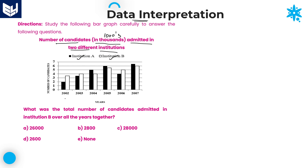If you observe carefully, in the year 2002, for Institute A the value is 2, and for Institute B this line is in between 3 and 4, so it is 3.5 — meaning 3,500. Whatever value is given, you multiply it by 1,000. The years given are 2002, 2003, 2004, 2005, 2006, and 2007 — six different years showing how many students joined those two institutions. The information is clear and easy to understand.